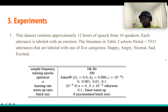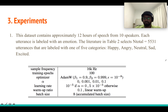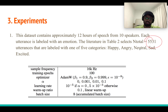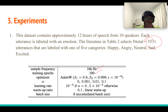All experiments are conducted on the IEMOCAP dataset, which has 12 hours of audio data, 10 speakers, five sessions — each session involving two speakers — and about 5,500 utterances. Some papers report results using 5-fold cross-validation and some use 10-fold. The hyperparameters include a sampling frequency of 16 kHz, 100 training epochs, the Adam optimizer, alpha varied from 0 to 1 with the best-performing value shown, specific learning rates, a warm-up ratio, and a batch size.